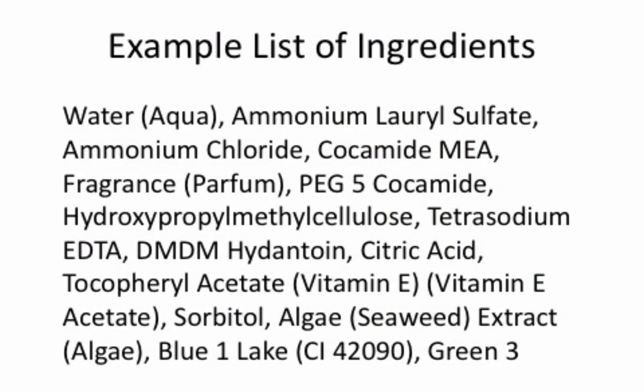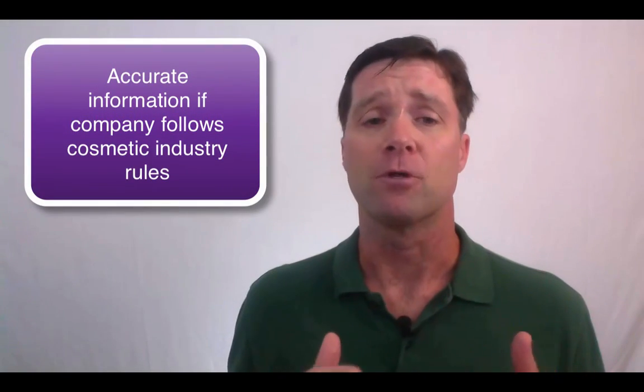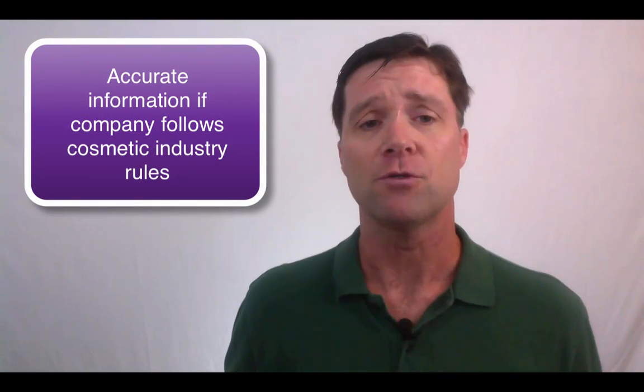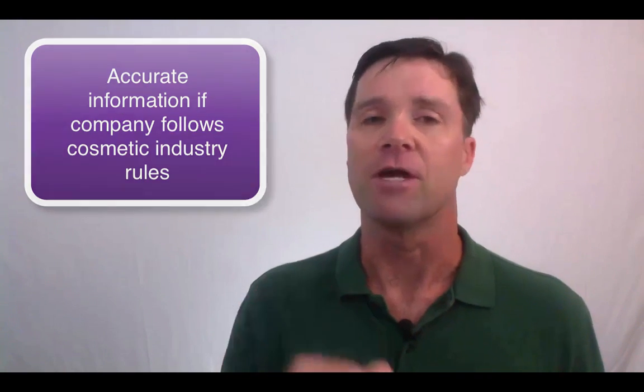For this example, I'm going to show you how to duplicate a shampoo formula. Here is the list of ingredients. You can see there is water, ammonium lauryl sulfate, ammonium chloride, and more. If the company is following the proper labeling rules of the cosmetic industry, then this is going to be accurate information and very helpful.